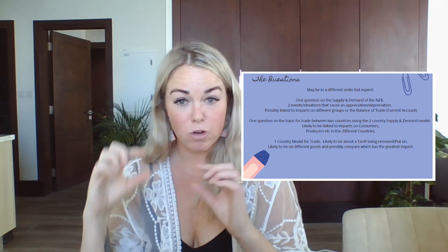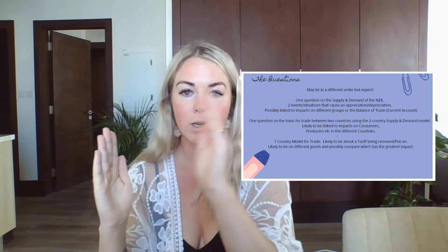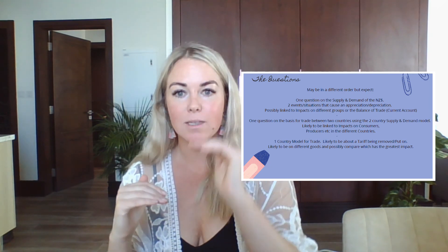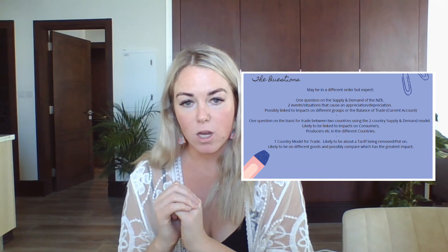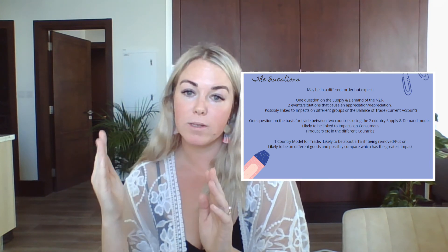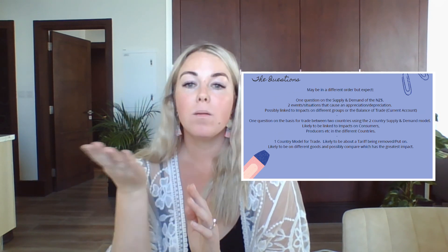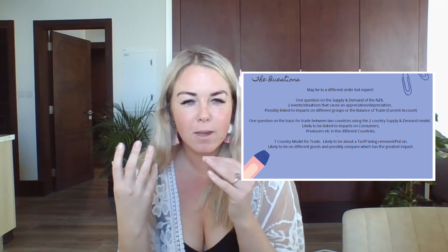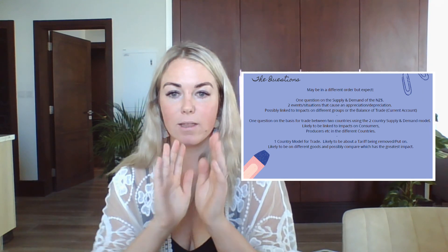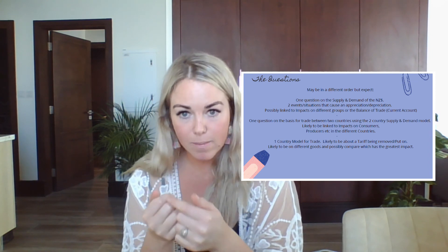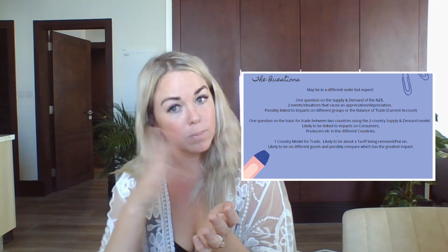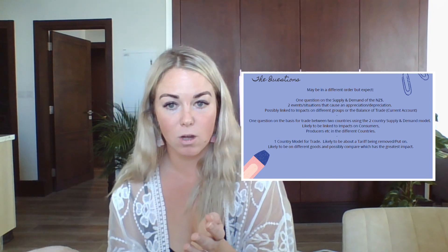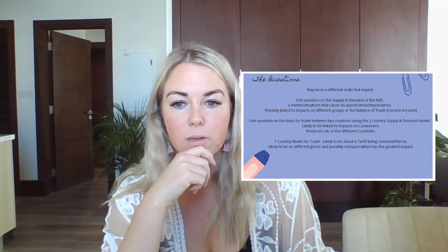In your written answer, explain both graphs — all your labels and lines — then use BLT reasoning. For consumers in Qatar, they now have access to meat they didn't previously have, and the shortage has been filled. For consumers in New Zealand, the price of meat may increase because of the export. From a producer's perspective, a producer now supplying more would see their total revenue increase because their supply has gone up.